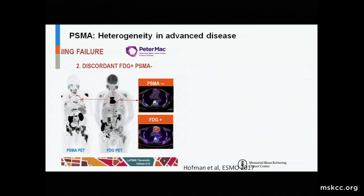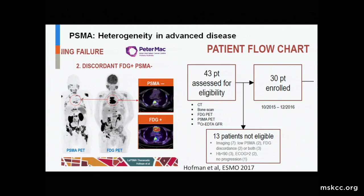Another example: this was data presented by Mike Hoffman at ESMO a couple of weeks ago, based on his therapeutic trial of lutetium radiolabeled PSMA, in which he also did plain old FDG PET scans on all patients. A patient with a big substernal mass clearly evident on FDG PET is essentially invisible on the PSMA PET. And this is not a unique case — of the 43 patients in this trial, 13 were taken off study: a handful for low counts and poor performance status, but others because they didn't have consistent PSMA-avid disease. So when we talk about PSMA imaging as our savior, we have to think about where in the natural history of the disease we're imaging these patients.